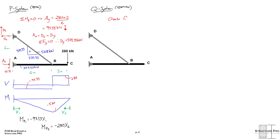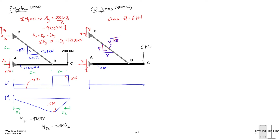For the Q system, we choose Q = 6 kN — rather than 1 kN — because it allows us to work with whole numbers. This creates corresponding reactions, and the force in the cable equals √(8² + 8²) = √128 kN. From A to B the axial force is 8 kN. The shear and moment diagrams are drawn just as before; the Q system is simply a scaled-down version of the P system.